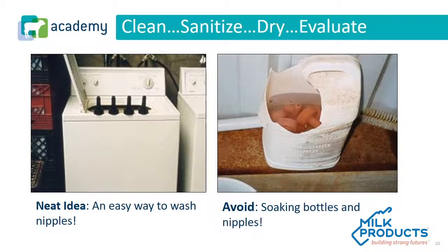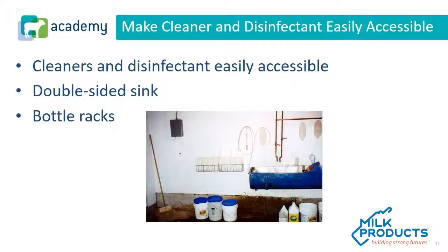The way we accomplish cleaning can vary. For example, when we wash nipples, it could be a good idea to put them in a washing machine — you get good scrubbing action and detergent. Just soaking bottles and nipples in a plastic container is probably not a good idea; you don't have the physical action of scrubbing. Try to avoid just soaking equipment — it's not very effective. When setting up your cleaning and sanitation protocols, make sure everything is easy to use and easily accessible, because if something is easy to do, it's more likely to get done and get done right.